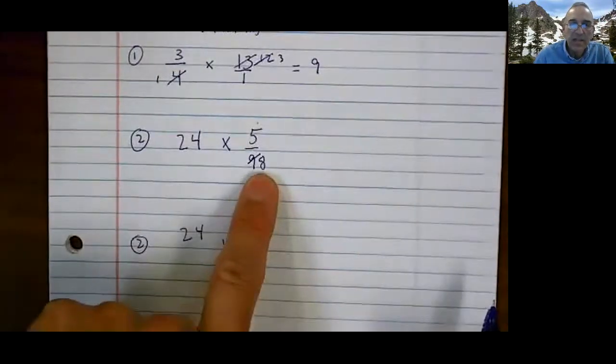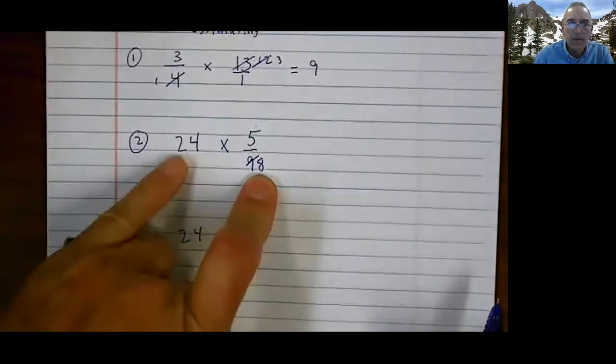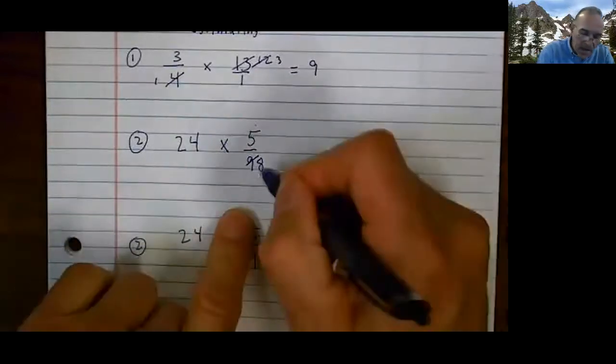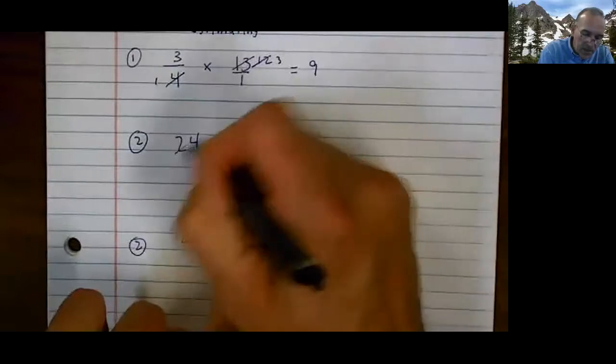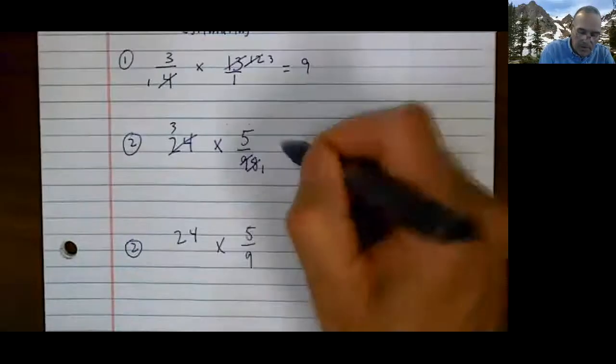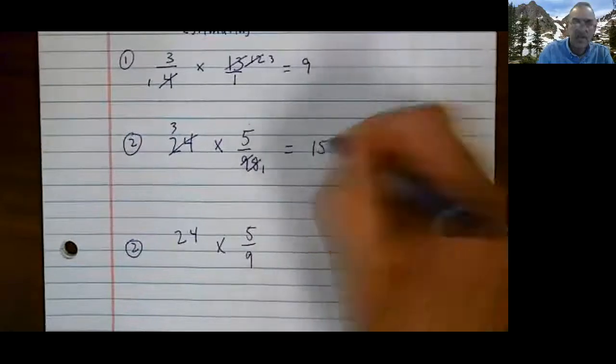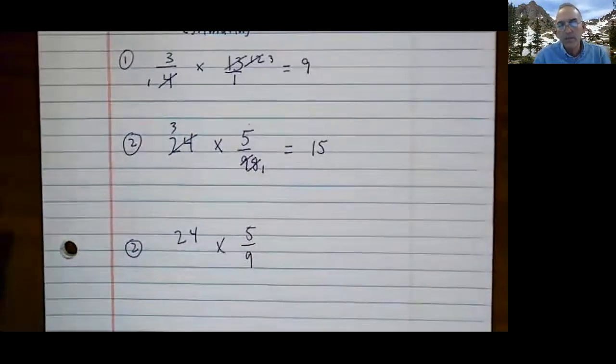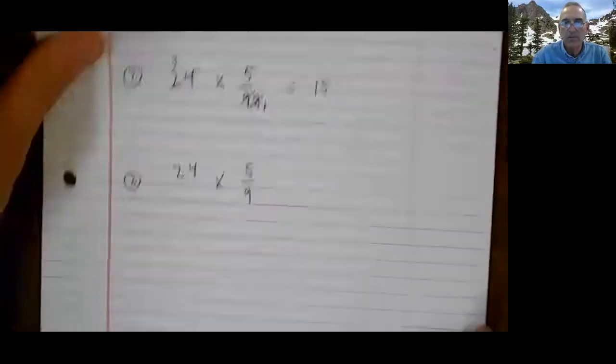I look at this one and I go, I don't know what to do. I could change this number right here to an eight. If I change that number to an eight, now I'm able to reduce. Eight goes into eight once. Eight goes into 24 three times. I could do three times five. I could get 15.